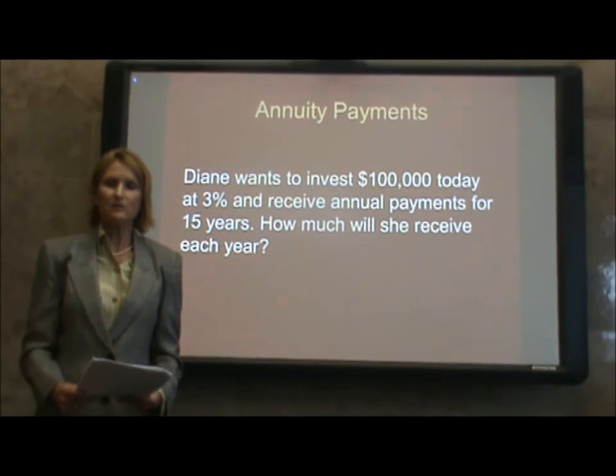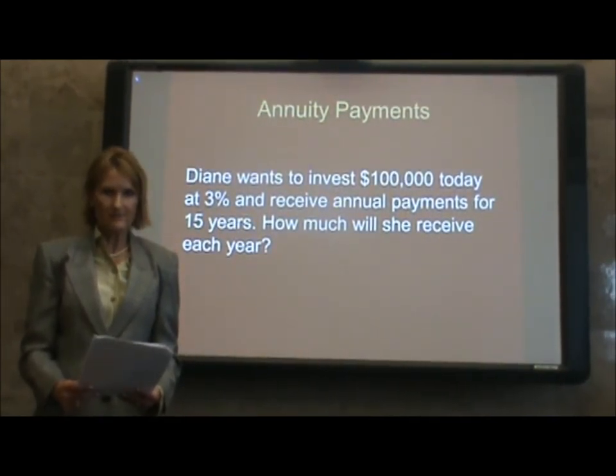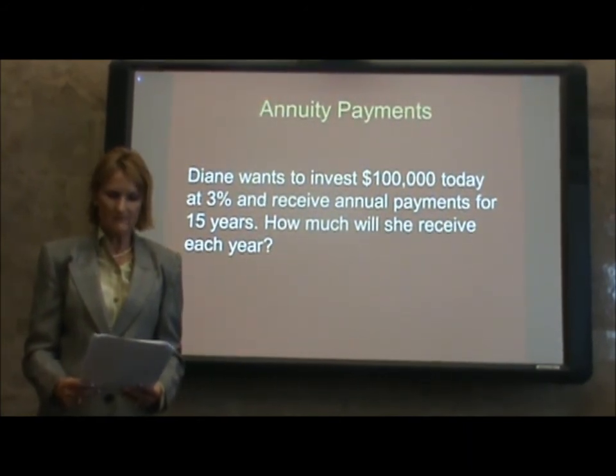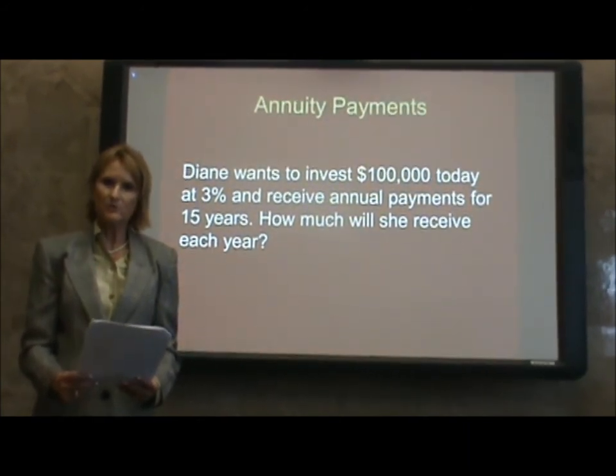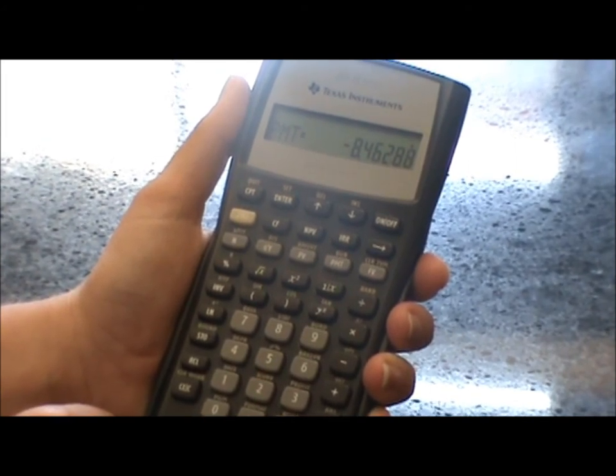Let's take an annuity payments example. Diane wants to invest $100,000 today at 3% and receive annual payments for 15 years. How much will she receive each year? First, enter $100,000 and press the PV key. Then 3 I over Y, 15 N, CPT, PMT, and the answer is $8,462.88.